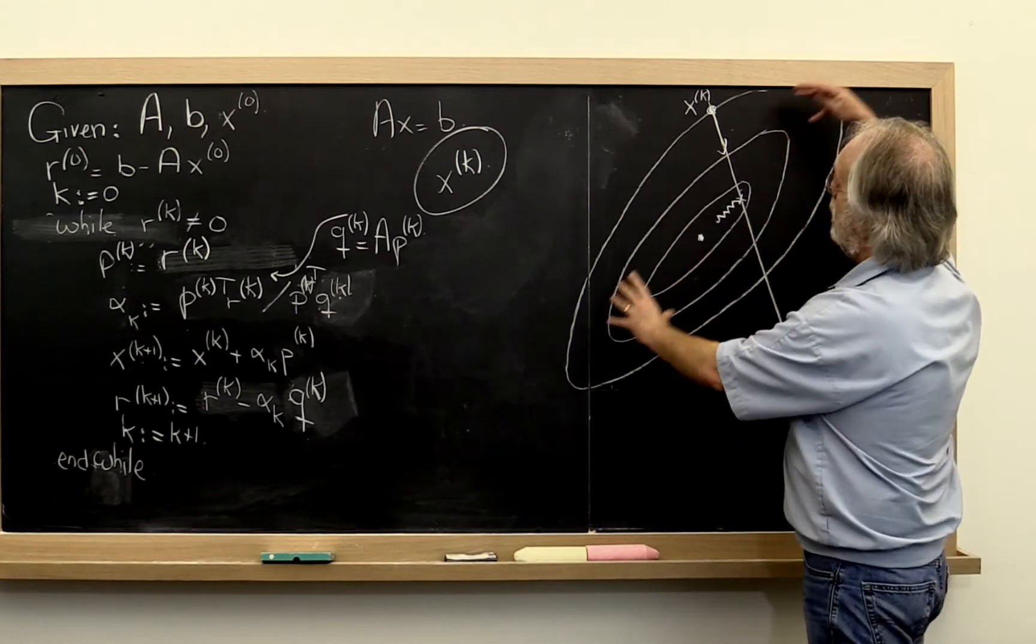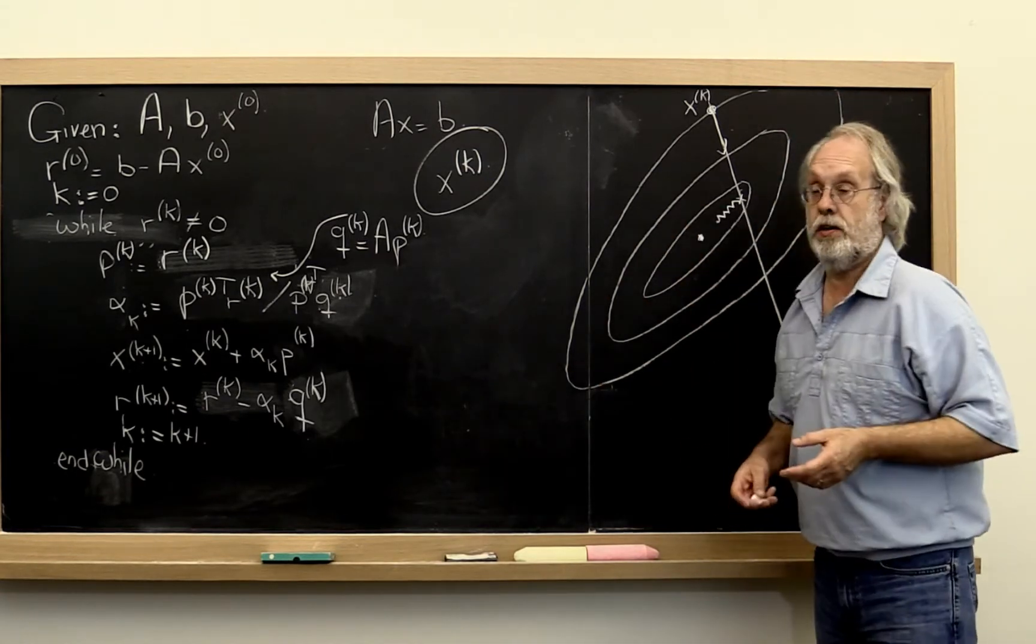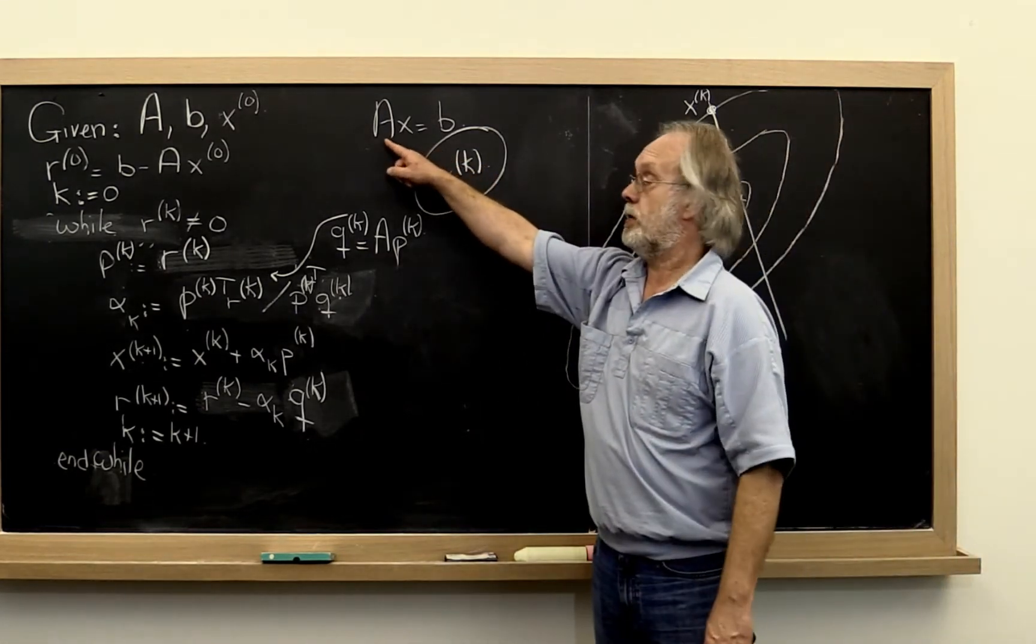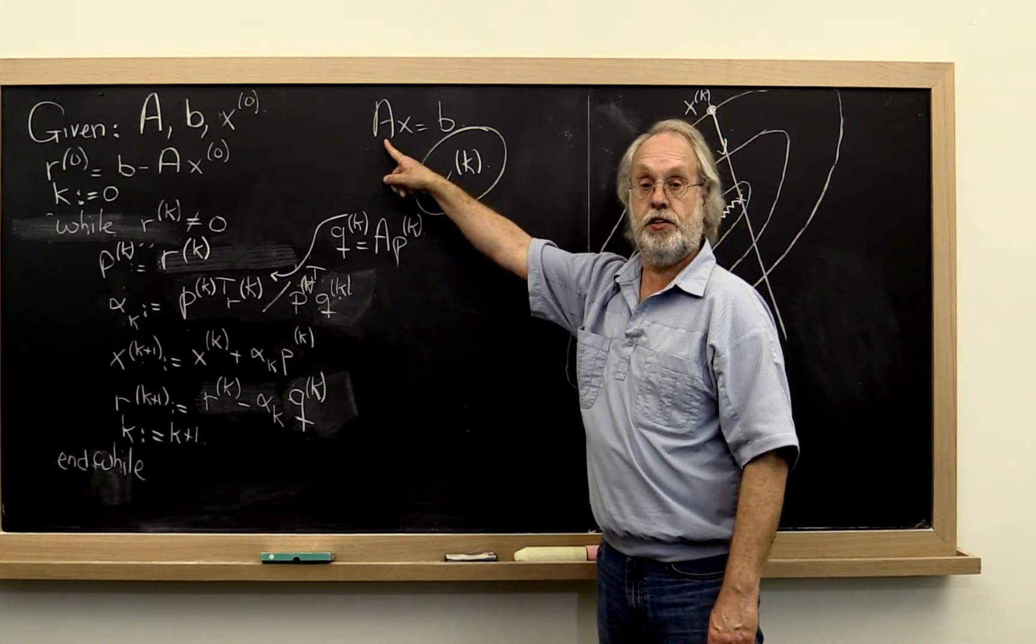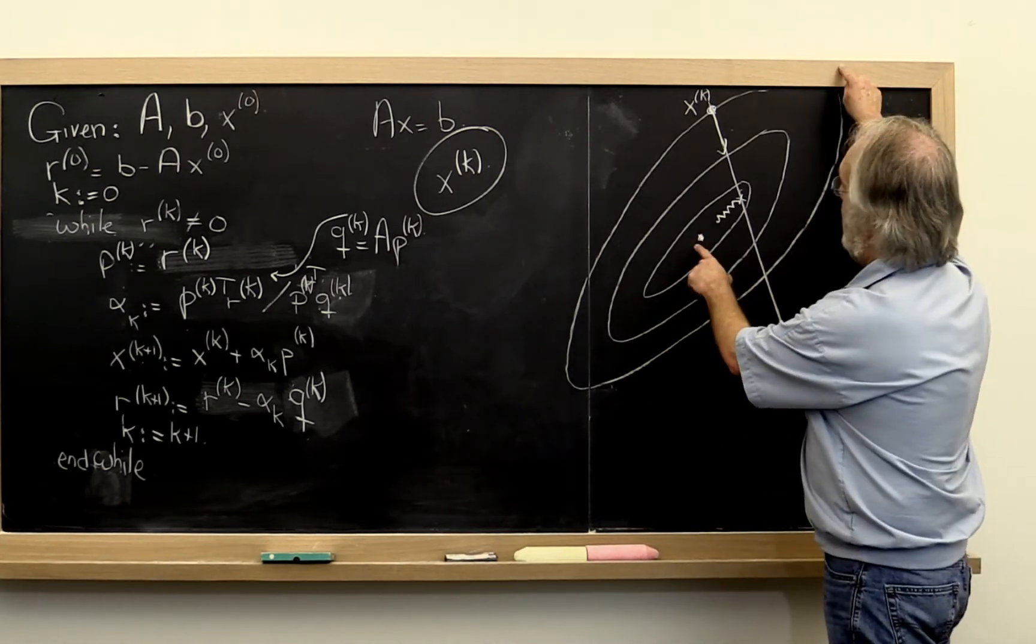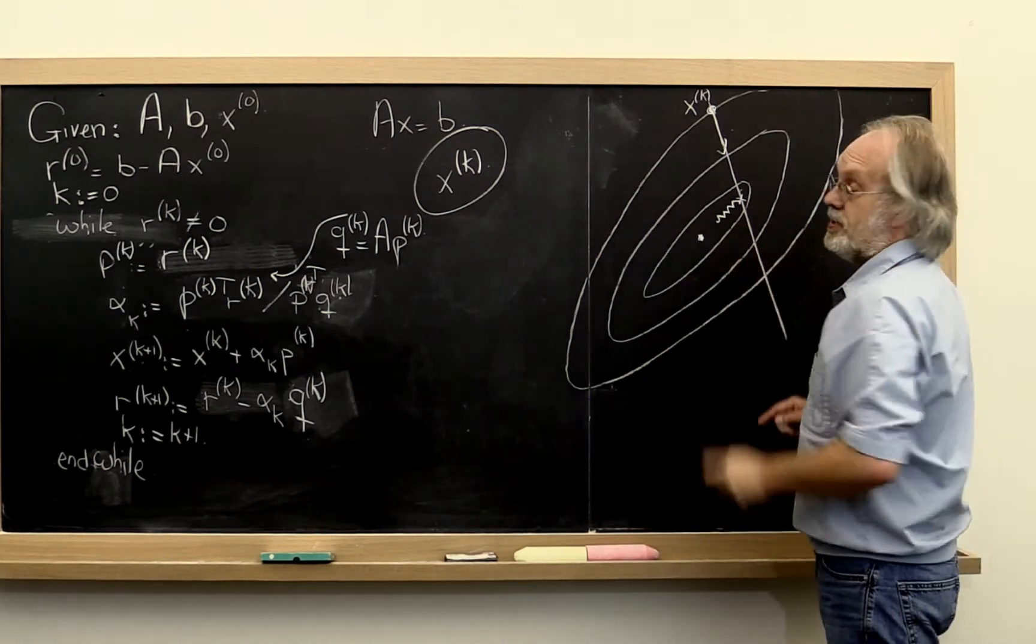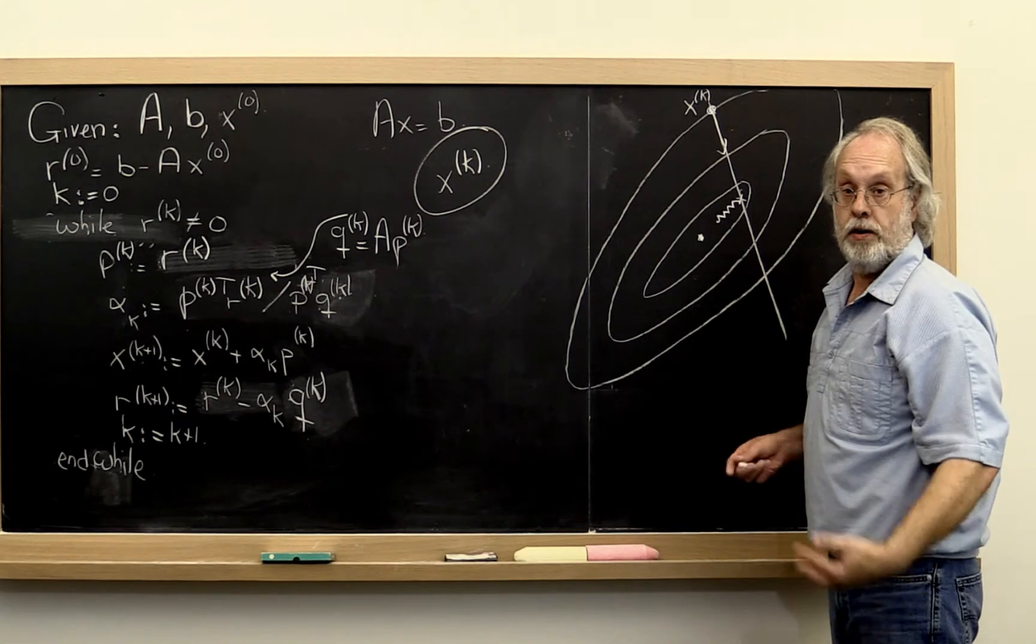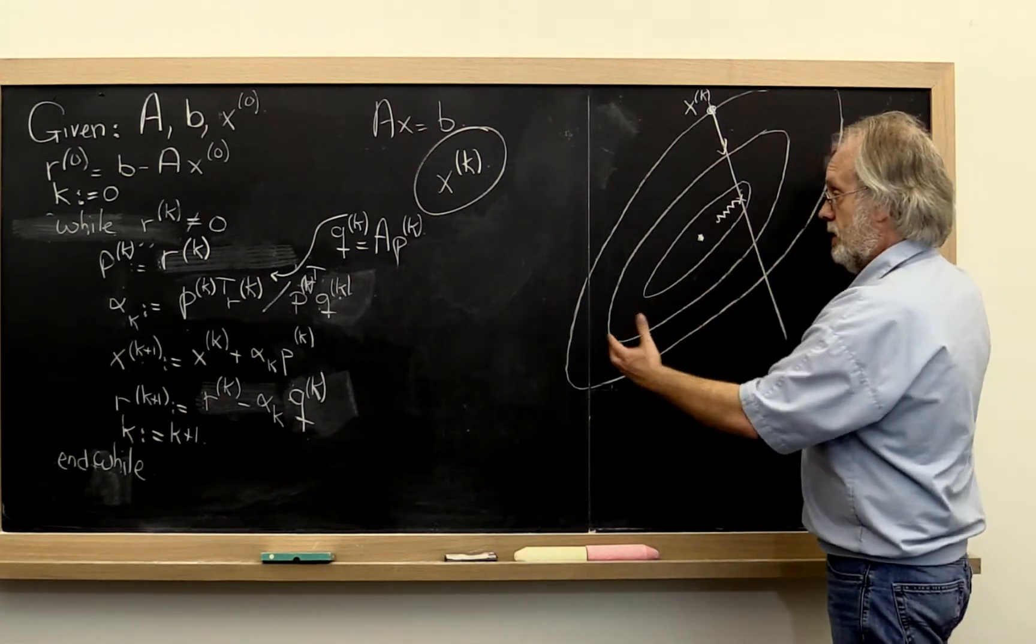And the elongated contours happen when the matrix with which we're computing has a very large condition number. In other words, we've sort of seen this before. The major axis divided by the minor axis is large when the condition number is large. Same thing here.